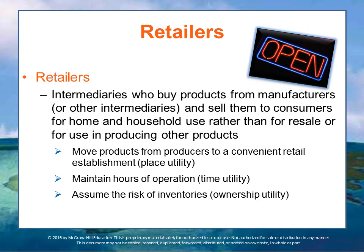Retailers buy products from manufacturers or from other intermediaries like manufacturers' reps, and sell them to consumers for home and household use rather than for resale or for use in producing other products. By bringing together an assortment of products from competing producers, retailers create utility. They arrange for products to be moved from a producer's factories to a convenient retail establishment — that's place utility. They maintain hours of operation to make merchandise available when consumers want to purchase — that's time utility. They also assume the risk of ownership of inventories — that is ownership utility.